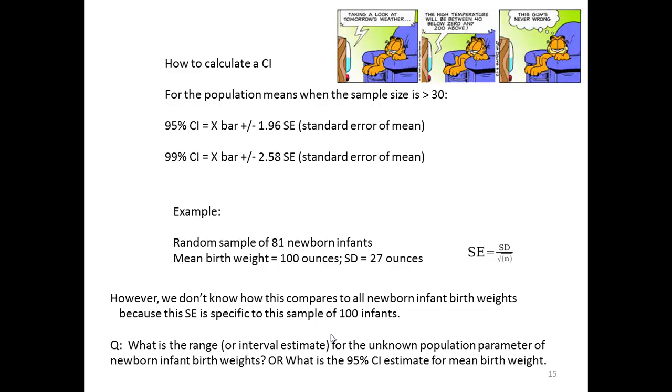However, we don't know if their mean weight of 100 and their standard deviation of 27 is comparable to all newborn babies in the whole wide world, the whole population. So our question is, what is the range or interval estimate for the unknown population parameter of newborn infants? Or in other words, what is the 95% confidence interval estimate for mean birth weight? So we'll know if our number matches to that of the population. Let's find out.